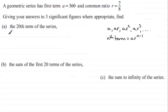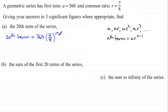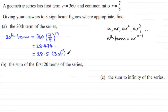The twentieth term is going to be equal to a — the first term, which is 360 — multiplied by the common ratio seven-eighths, raised to the power n minus one. We're looking for n being 20, so 20 minus one gives us 19. Put this through your calculator and you get 28.474... Rounded to three significant figures, this is 28.5.